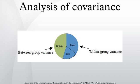Test the homogeneity of regression slopes assumption — to see if the covariate significantly interacts with the independent variable, run an ANCOVA model including both the IV and the CV×IV interaction term. If the CV×IV interaction is significant, ANCOVA should not be performed.